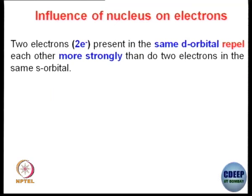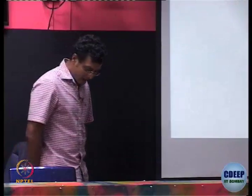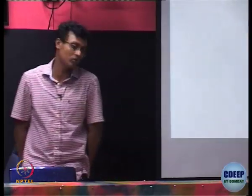Another thing to understand is that d electrons repel each other much more compared to p or s electrons. How is that? It is like involvement — how much involved you are in a particular thing. Let me give you an example of your hostel rooms. If you have 4 people in a room, that is possible.